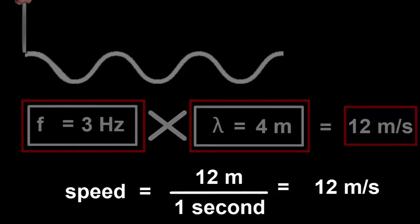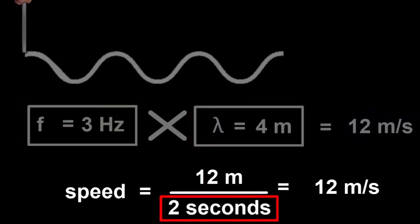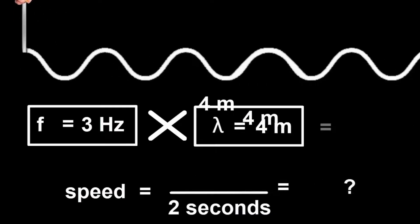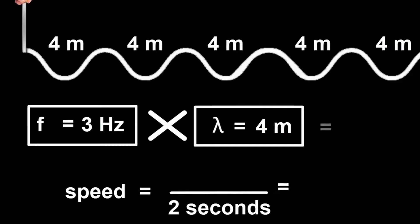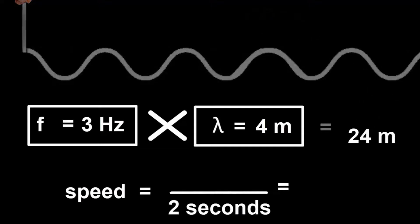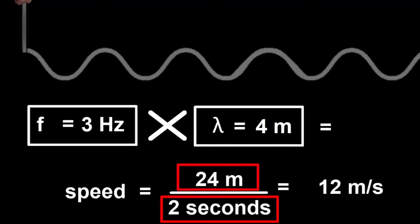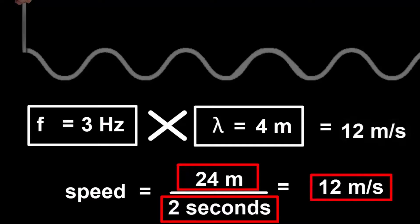But what if we had chosen a time period of two seconds instead — wouldn't that change our answers? The frequency is three waves per second, so in two seconds six waves will be made, each four meters long. The crests move 24 meters in two seconds, or 12 meters per second — the same answer. Even though we doubled the time, we also doubled the distance the wave traveled, so their ratio, which is the speed, stays the same. Multiplying the frequency by the wavelength always gives us the speed of a wave.